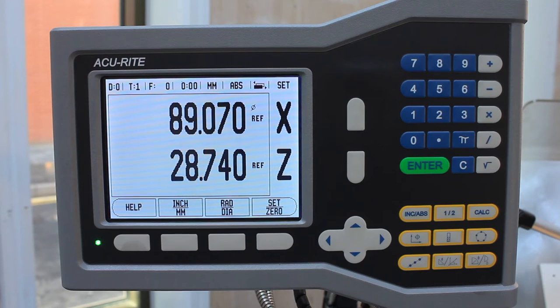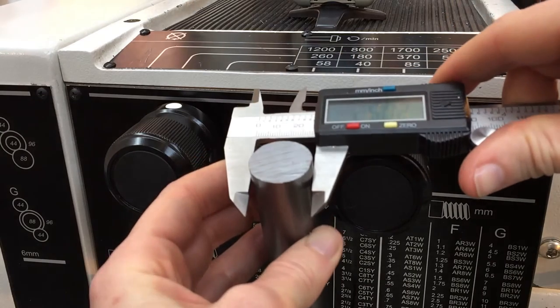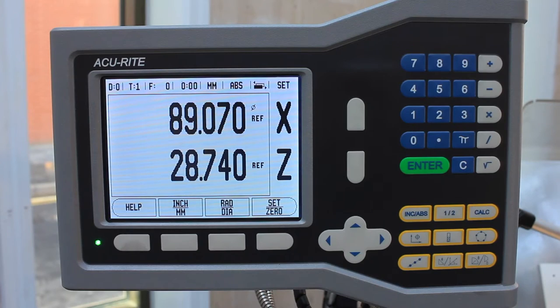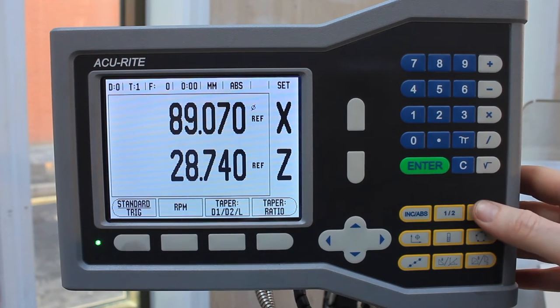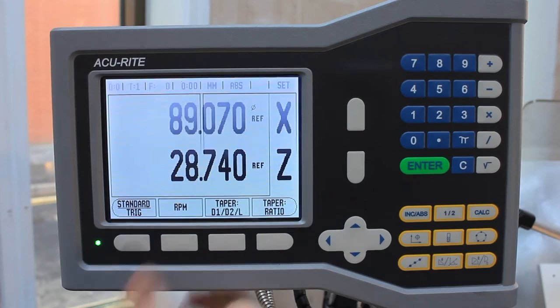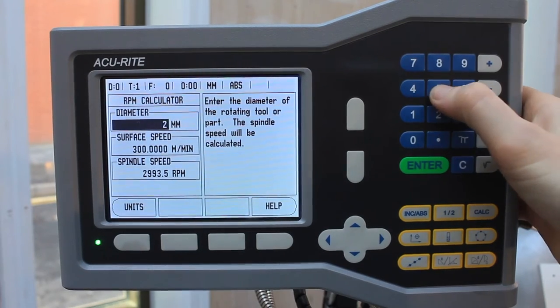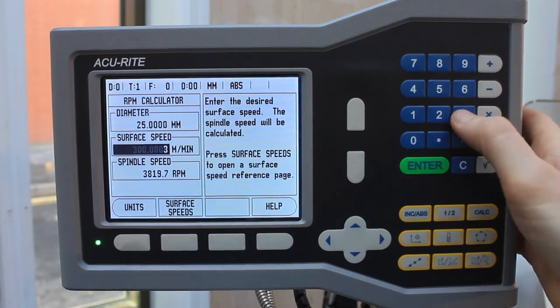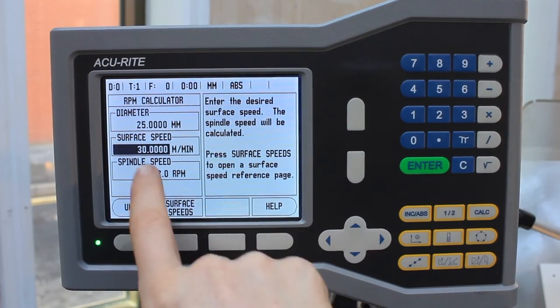Suppose we don't know the speed at which to run the machine, so we'll find the diameter which is near enough 25 and we'll use the RPM calculator. Hit the calculator button here, hit RPM, and here we can put in the diameter of the workpiece 25, surface speed 30 for steel, and we get 382.